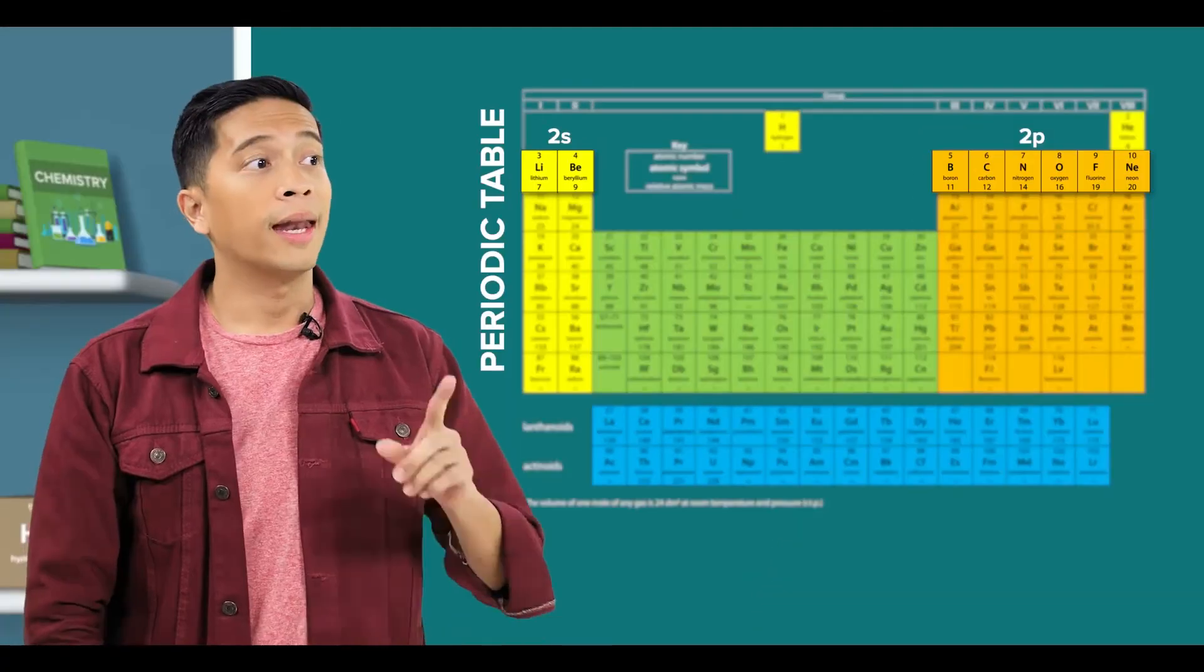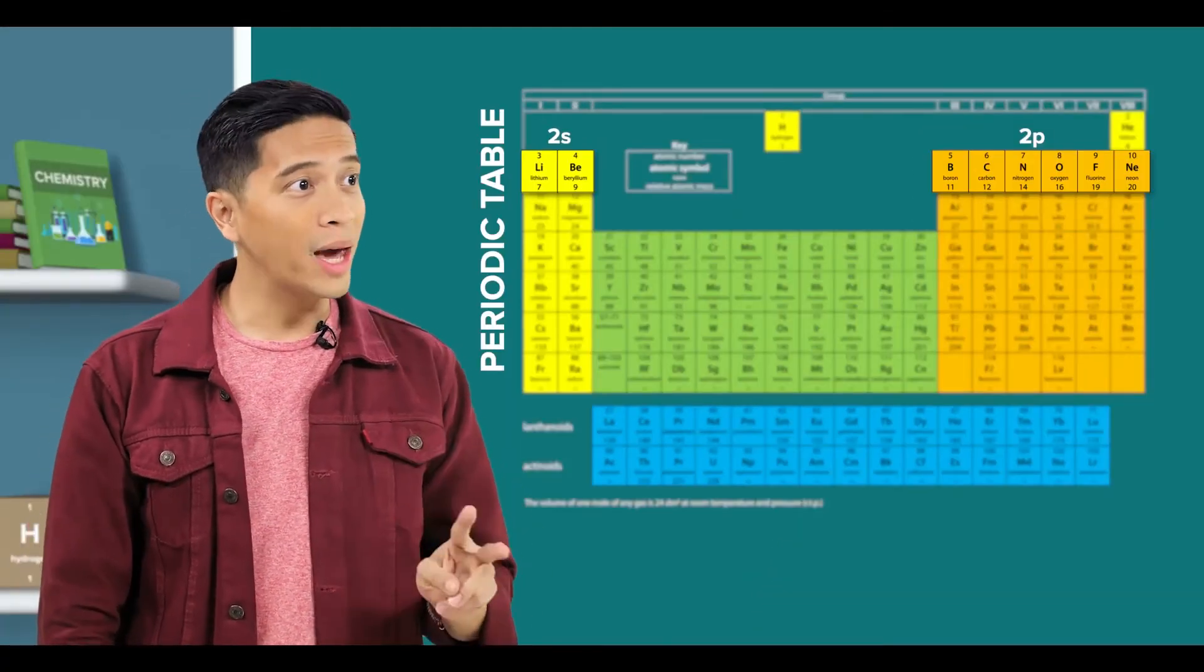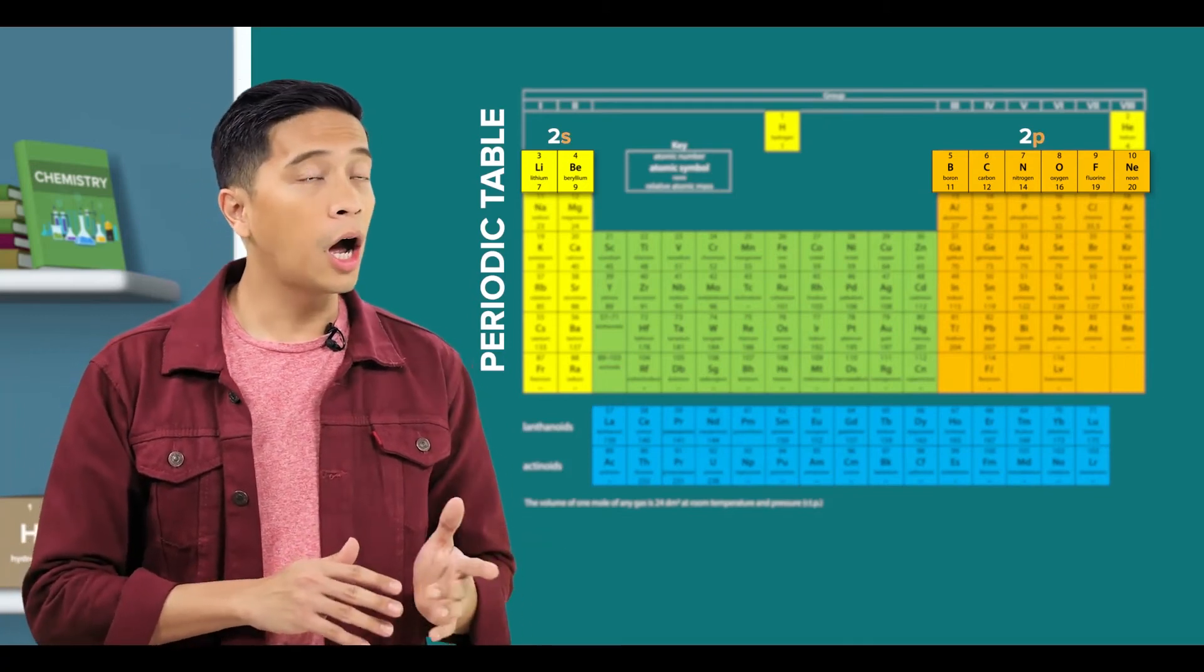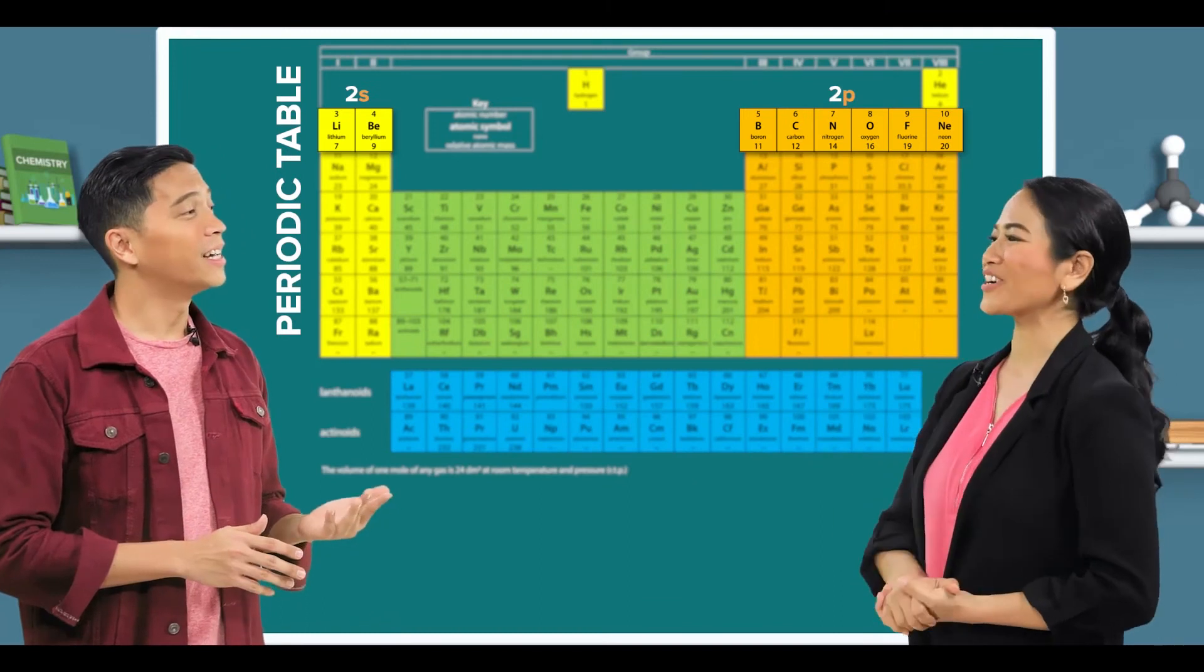And I assume that for 2S and 2P, the S and P are subshells? Correct once more!